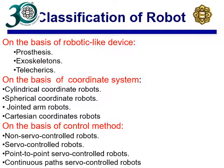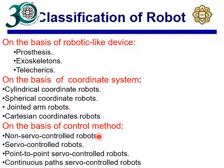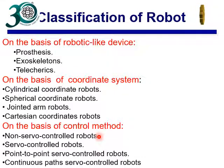On the basis of control method, you can have servo control, where all joints have servo motors and a feedback loop. Non-servo control robots use no feedback signal — you may use simple stepper motors. You may also have point-to-point servo control, where the robot moves from one point to another regardless of the path taken.